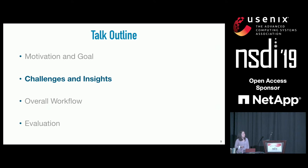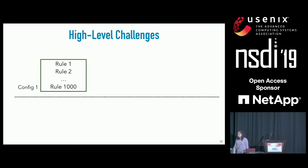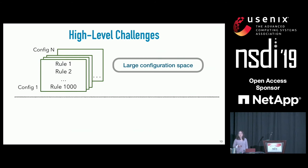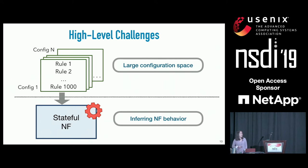Let's move to what makes the problem difficult and our insights to address them. At a high level, there are two challenges. First, there is a large space of configurations, and naively enumerating all possible config space is infeasible. Even given a single configuration, inferring the behavior model for a stateful NF is itself a very difficult problem. Additionally, NFs can modify packet headers, making the problem even more difficult.